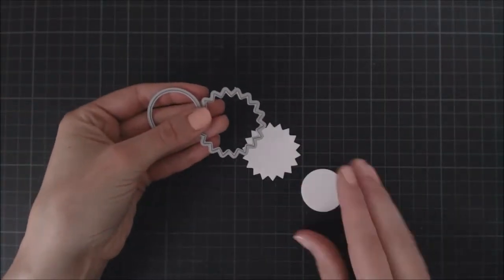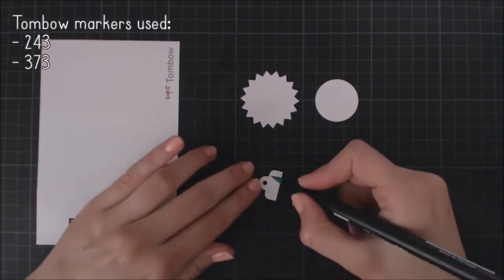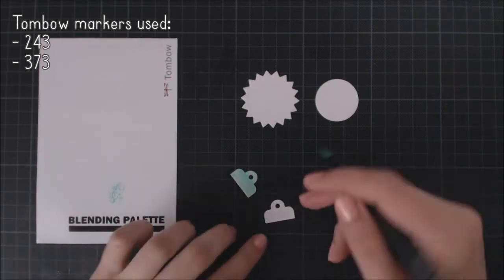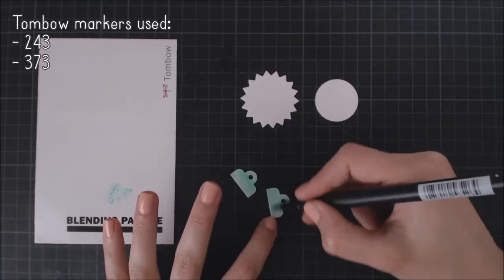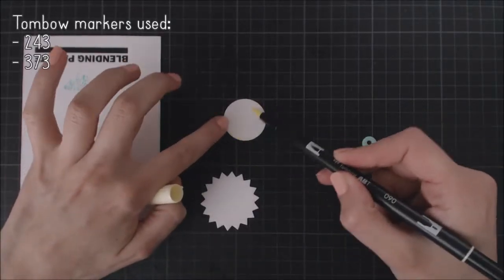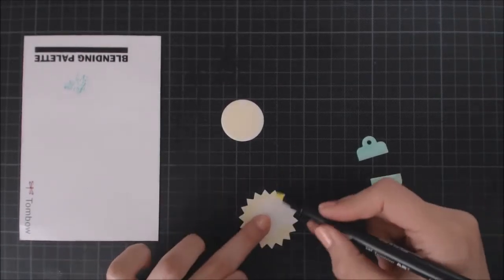I decided to add an extra element to my card, so I went ahead and cut these pieces from the Sun and Moon die set to create a cute little sun. I'm going to color it and the little tabs with my Tombow markers again, using the markers and the blender just like I did before with the flamingo.